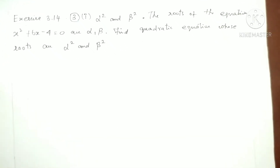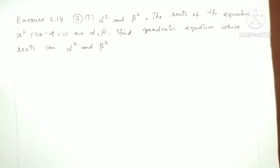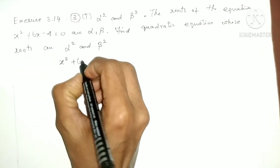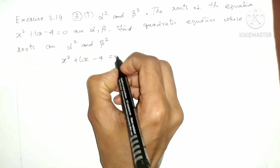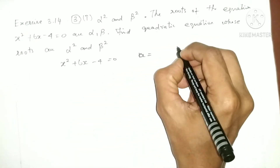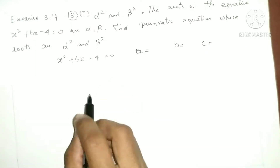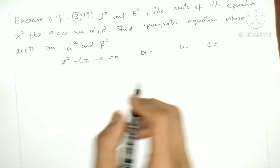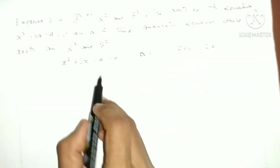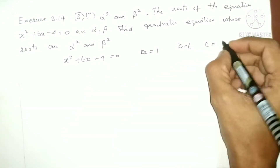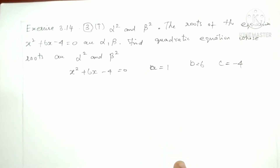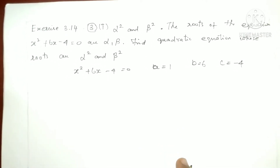So as usual, first we find the sum of the roots and product of the roots. In the equation x² plus 6x minus 4 equals 0, we identify a, b, c. So a is the x² coefficient which means 1, b is the x coefficient which means 6, and c is the constant term, so minus 4.